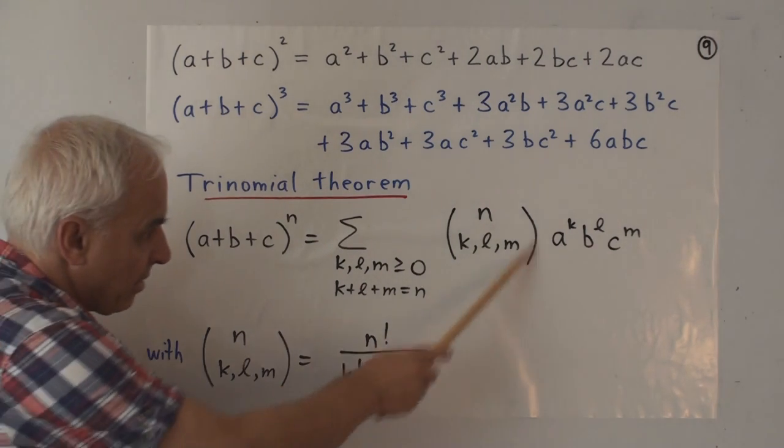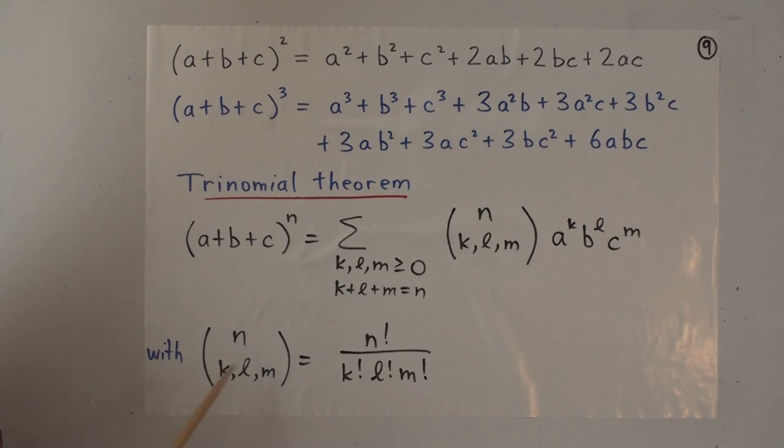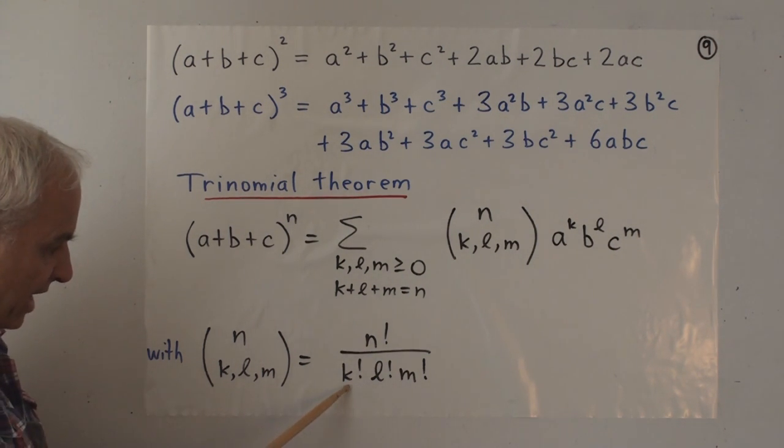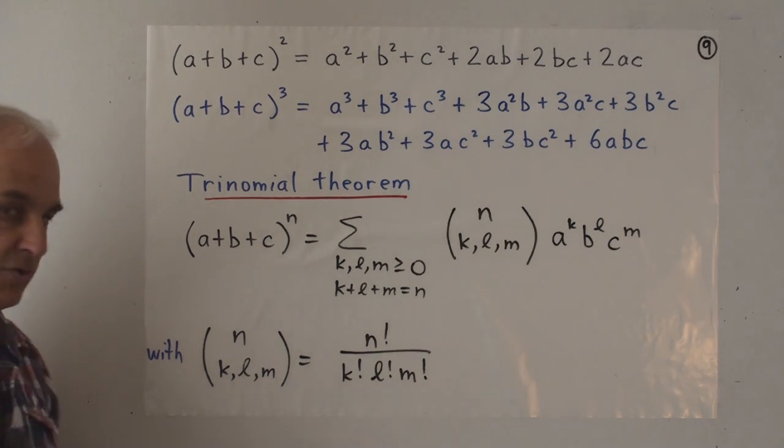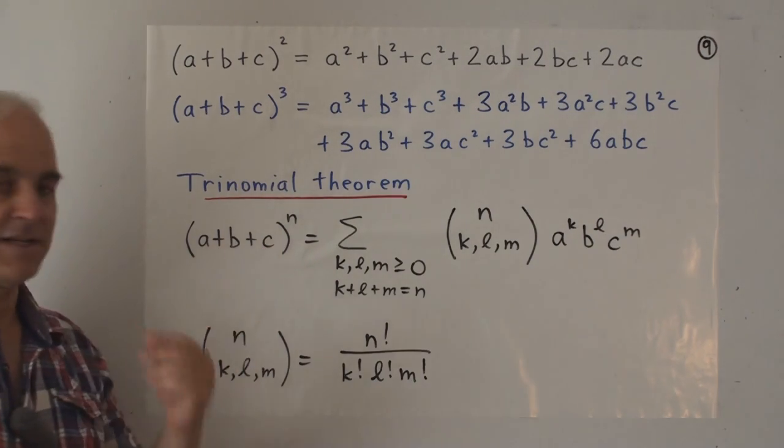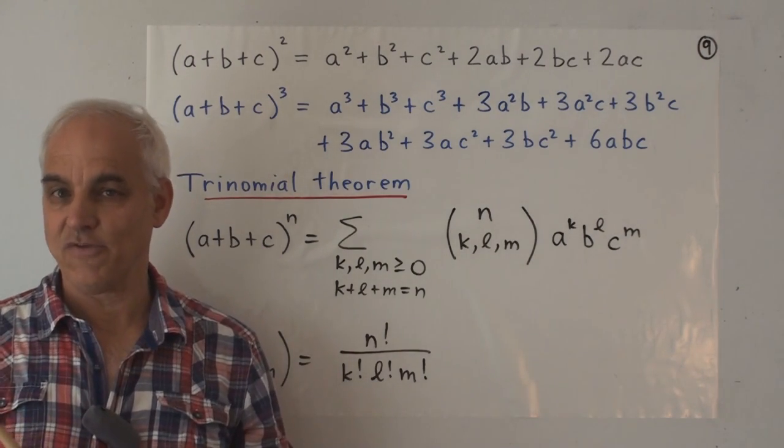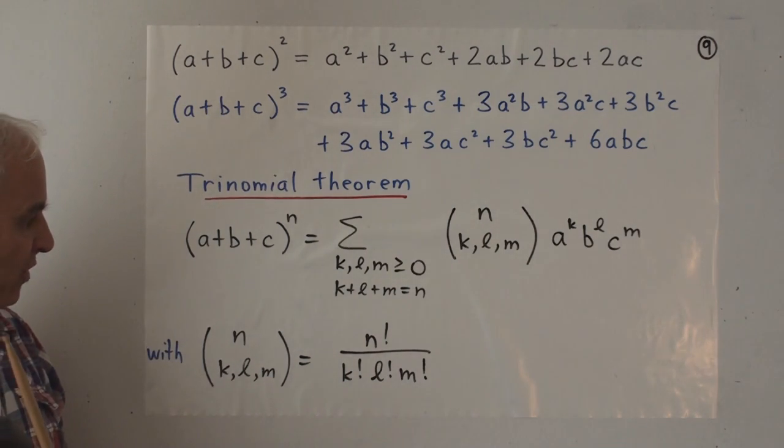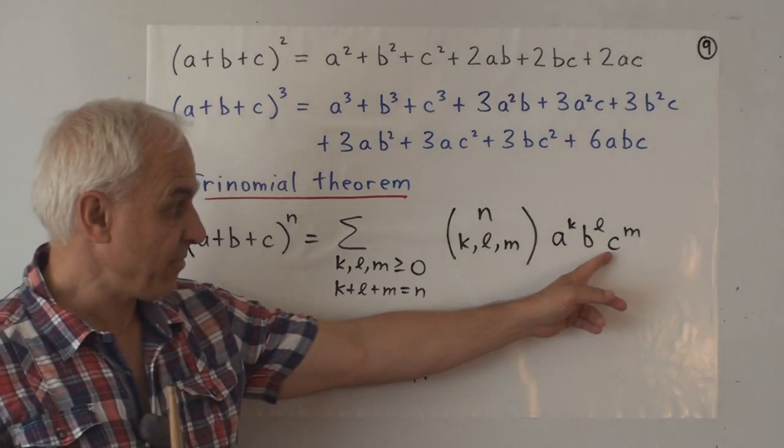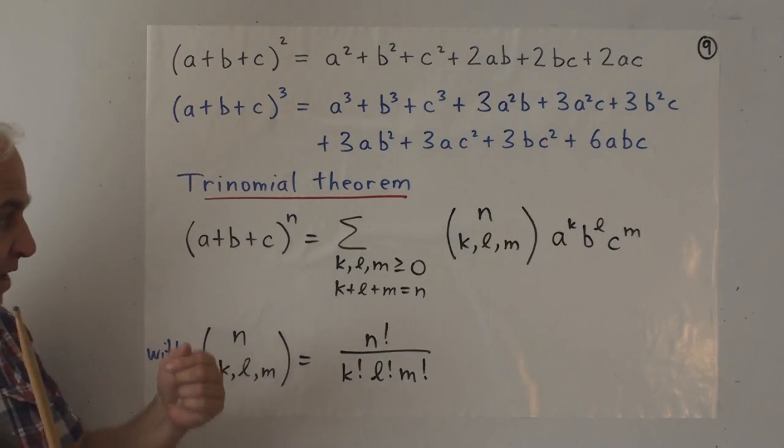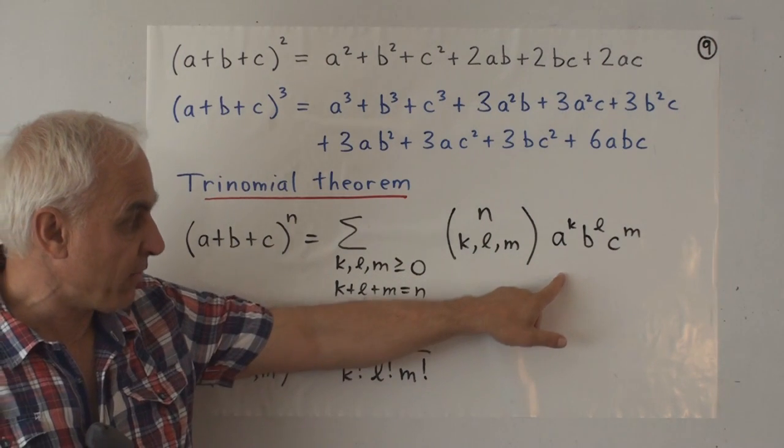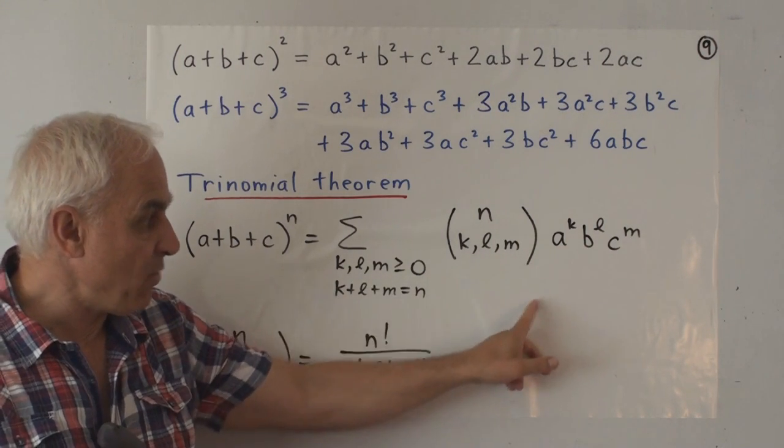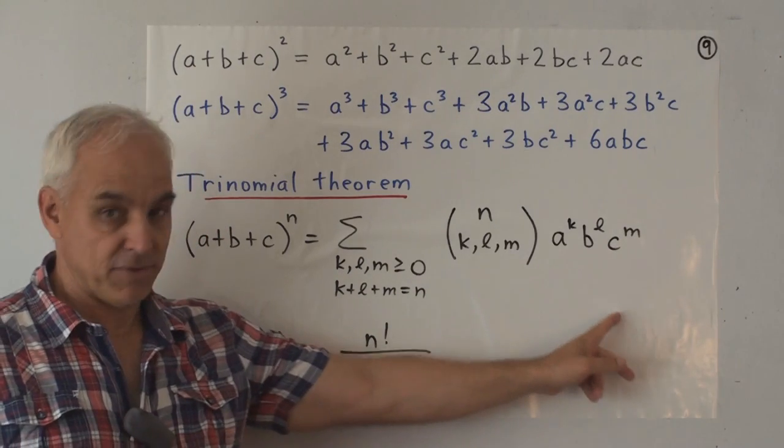And what is this multinomial coefficient in this case? So n choose k, l, m. Well that's n factorial divided by k factorial l factorial m factorial. And this is easiest seen if you think about this second interpretation of the binomial coefficients that I gave you. That what you should do is you should think of a term like this asking what's its coefficient. It corresponds to labeling the a's a1 through ak,